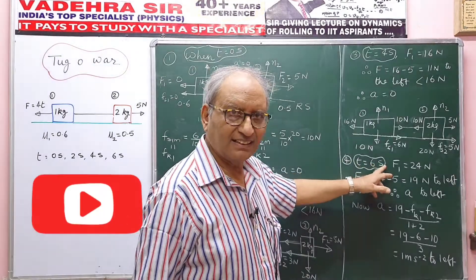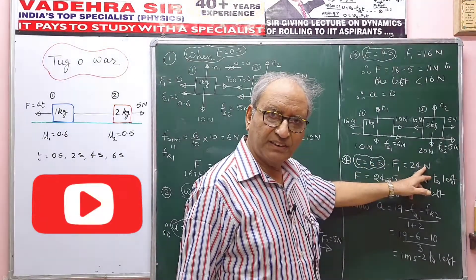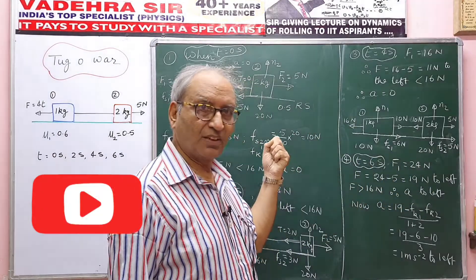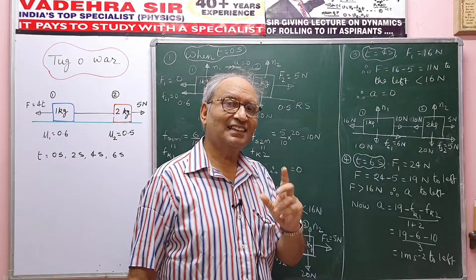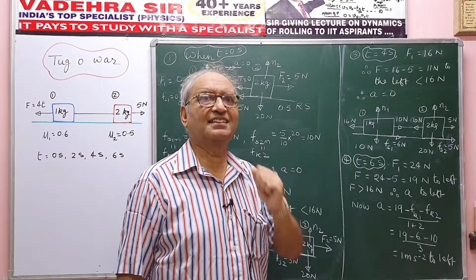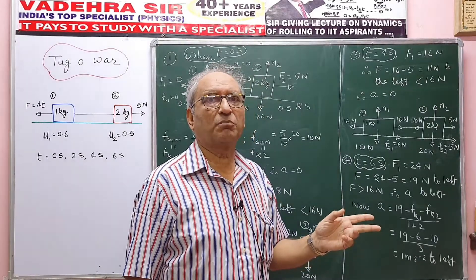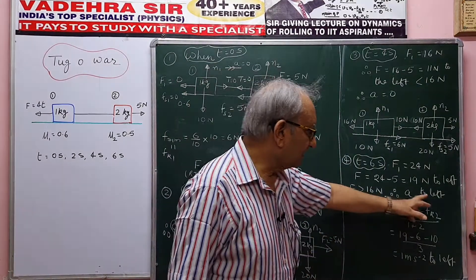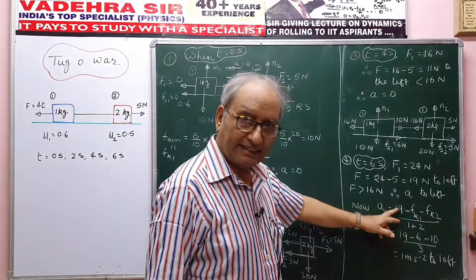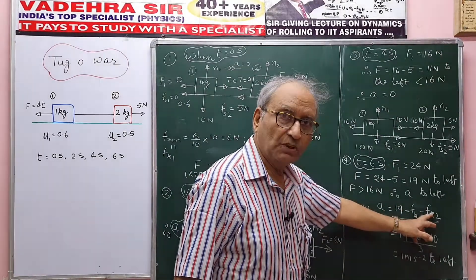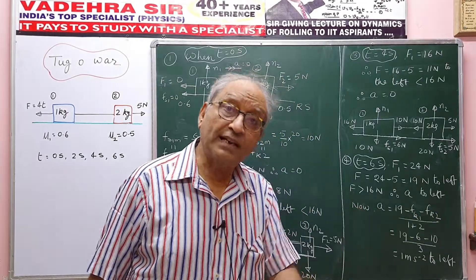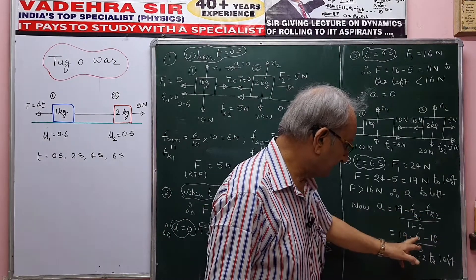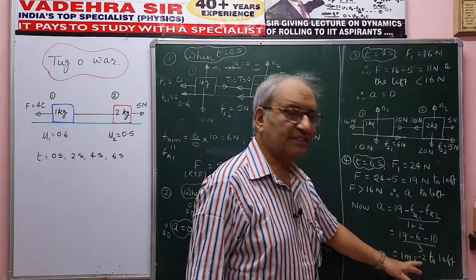When T is 6 seconds, F1 = 24 Newton, and the resultant attracting force is 24 − 5 = 19 Newton to the left. This is more than 16 Newton, so the system will slide. There will be kinetic friction on both blocks, but kinetic friction equals maximum static friction here. Acceleration = (19 − 6 − 10) / 3 = 3/3 = 1 meter per second squared to the left.